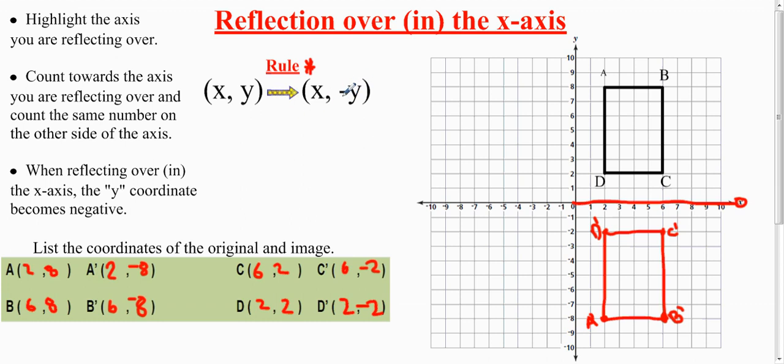This doesn't mean that y is always going to be negative. It means that if the original y, whatever the original y is in sign, it changes to the opposite of what the original y is. So if the original y is 2, then the y becomes a negative 2 if it's reflected over the x-axis. If it's a negative, it becomes a positive.